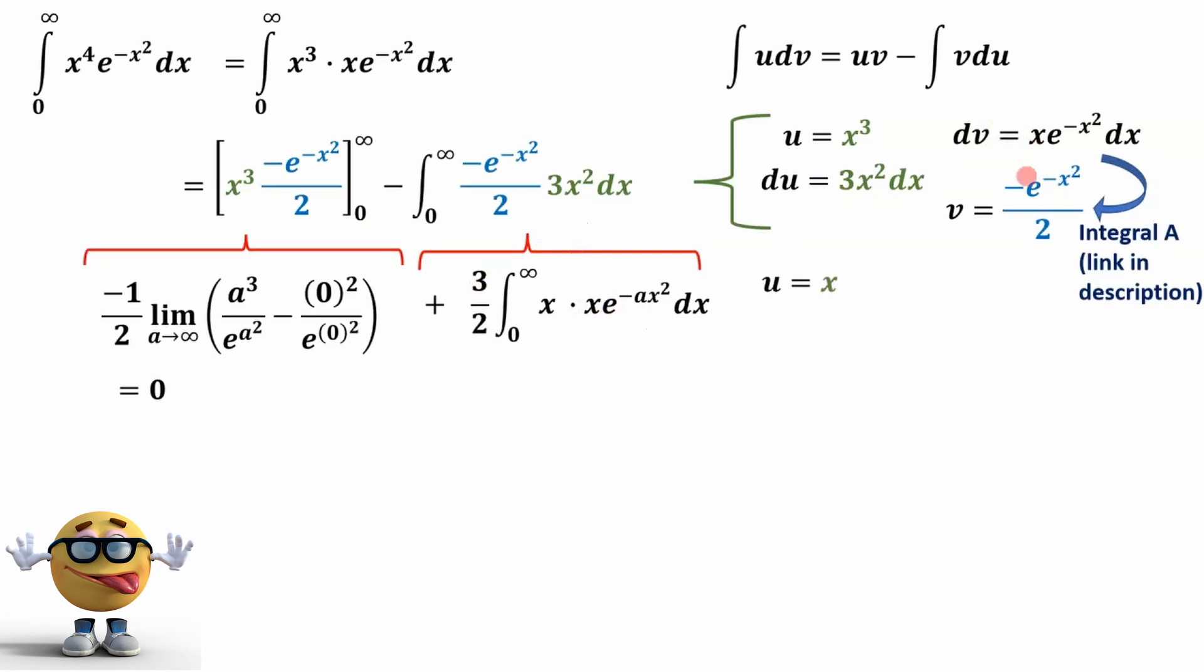And then do this integral using substitution. So u equals x, so du equals dx, and now our dv is going to equal everything else, which is this. This is our dv, this part right here. This part right here is dv. And then the integral of this is what we just did. We just did this one here. So it's the exact same integral. So v is going to equal negative e to the negative x squared over 2.